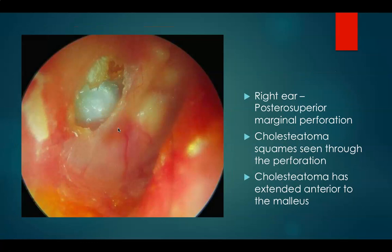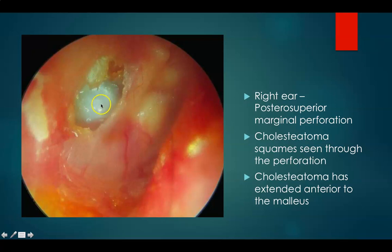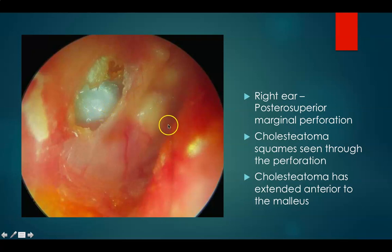This is the right ear. There is a posterosuperior marginal perforation with cholesteatoma inside. Cholesteatoma squames can be seen through this perforation. The cholesteatoma has extended anteriorly medial to the ossicles and has formed a bulge in the anterior quadrant as well.